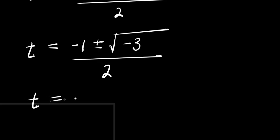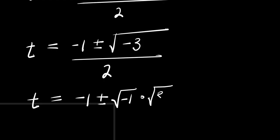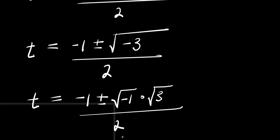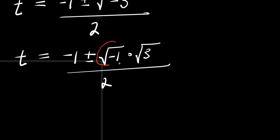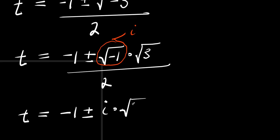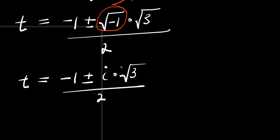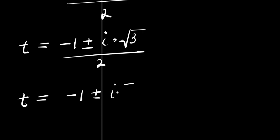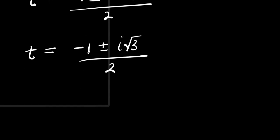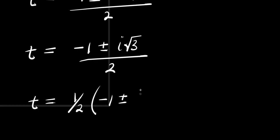So from here, I will have t equals negative 1, plus or minus — we can express it as square root of negative 1 times square root of 3, divided by 2. And when you have square root of negative 1, this is iota — the imaginary number i. So we have t equals negative 1, plus or minus i times square root of 3, divided by 2. I can factor out 1 over 2, so t equals (1/2)(negative 1 plus or minus i root 3).